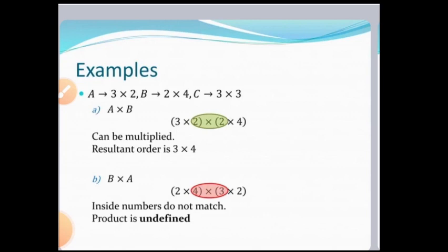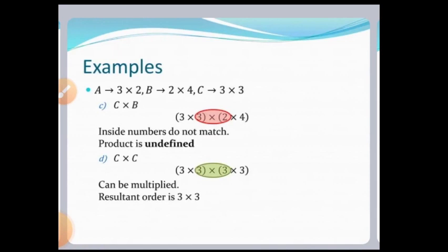Similarly, for B×A: take B first, that is 2×4 and 3×2. Here 4 is not equal to 3, so we cannot multiply B×A. Similarly, for C×B: that is 3×3 and 2×4 — the columns of the first matrix are not equal to the rows of the second matrix, so we cannot find C×B. But for C×C: the columns of C equal the rows of C, so we can multiply C×C, and the resultant matrix has order 3×3.